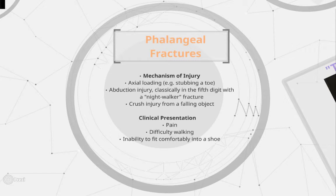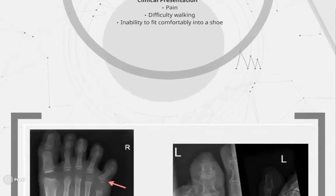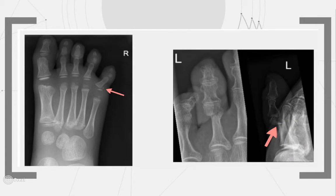Phalangeal fractures: fractures of the phalanges can be markedly painful, and the mechanism of injury is typically a heavy object falling on the toes, or forced abduction of a stubbed toe against an obstacle — appropriately termed a nightwalker fracture. X-rays show, on the right, an angulated Salter-Harris II fracture of the fifth proximal phalanx, and on the left, a dorsally displaced transverse fracture of the neck of the third proximal phalanx.